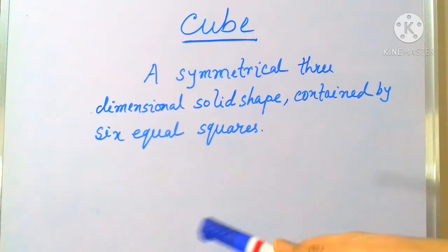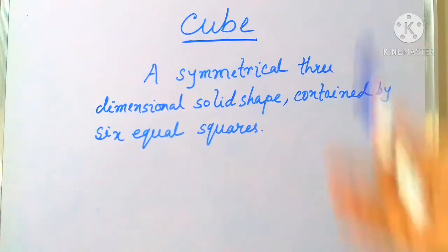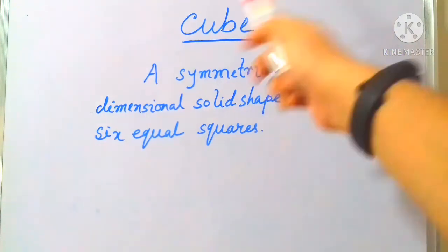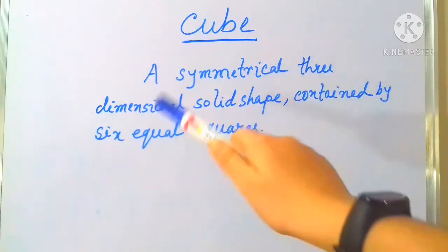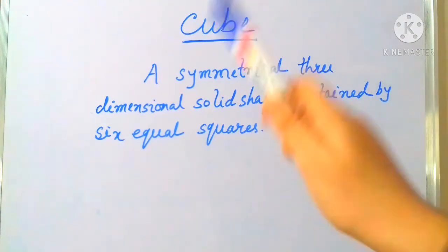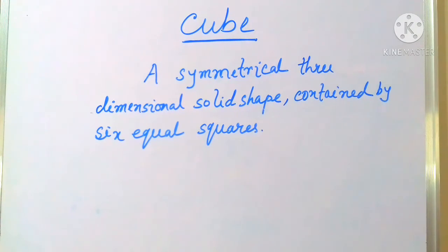More solid shapes are there. We will discuss in my upcoming videos and cube I am discussing today and cube is a solid shape and it is three dimensional shape because it has length, breadth and height.